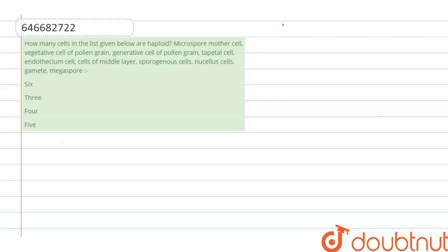many cells in the list given below are haploid? Haploid cells are the ones which have chromosome number reduced to half, and this happens to restore total number of chromosomes after fertilization.